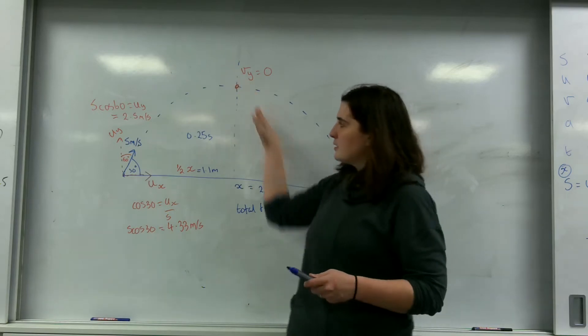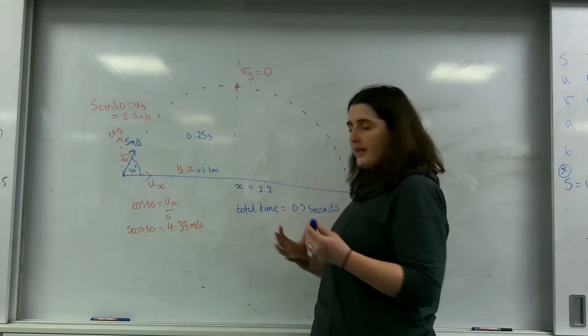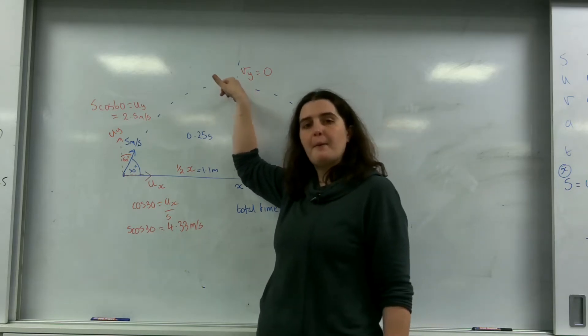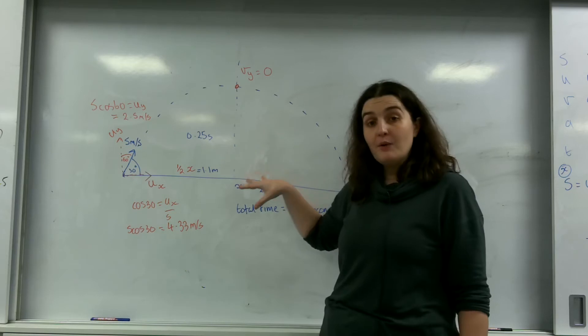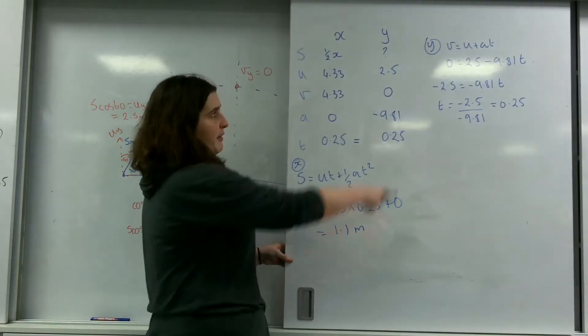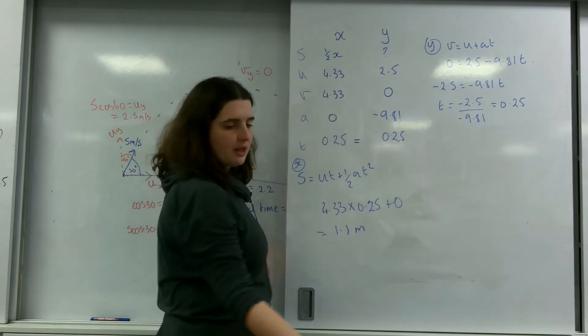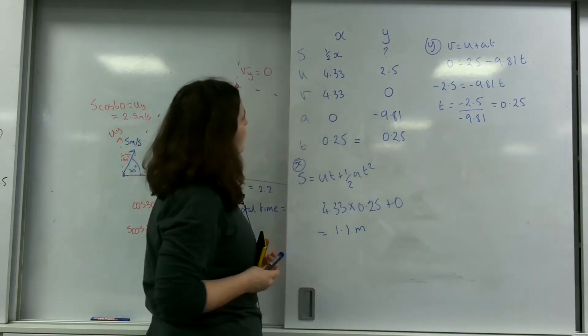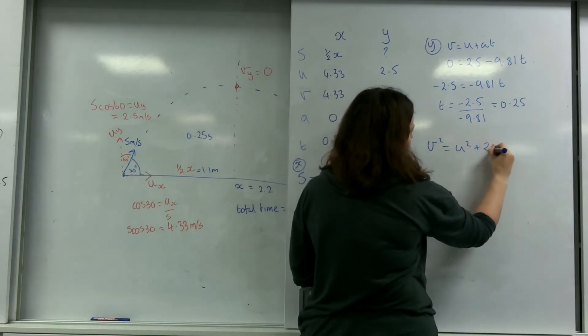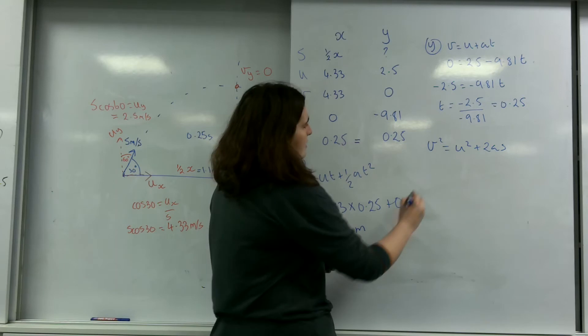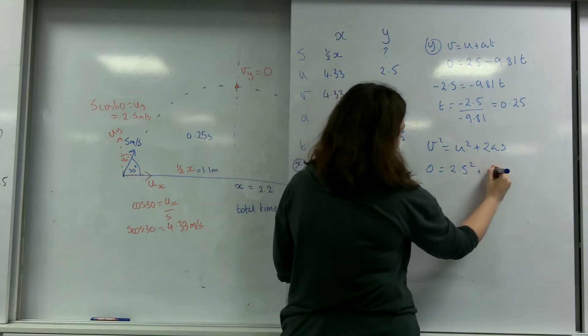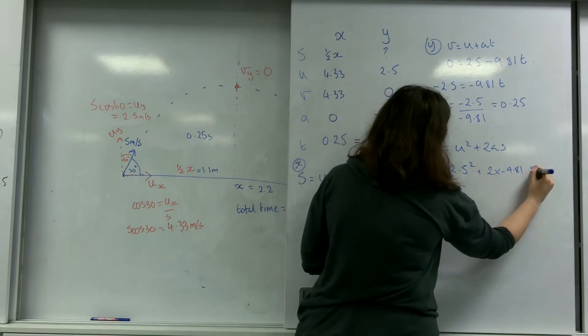So by working to this halfway point is vital because you understand, you know a lot more information about this point here. And you can work out so much information. You can then work out if you wanted the maximum height by finding the y direction. Now I can do that right now by using, which am I going to use? I'm going to use V squared equals U squared plus 2AS.